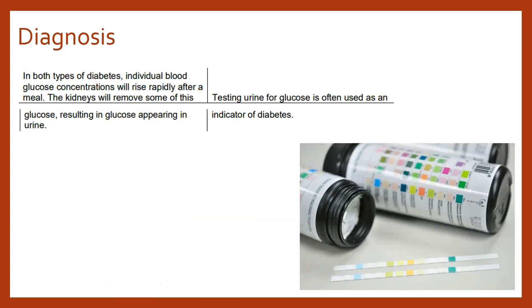Both types of diabetes tend to have the same sort of consequences — that's glucose remaining high within the bloodstream, with particularly rapid rises following consumption of more glucose from the diet. The kidneys will work quite hard to remove some of this glucose.